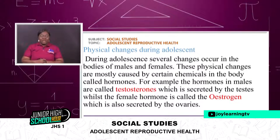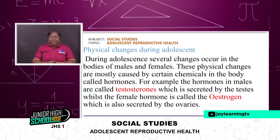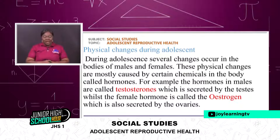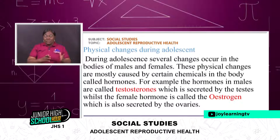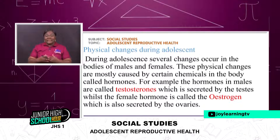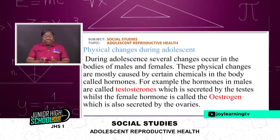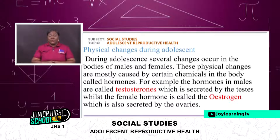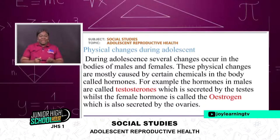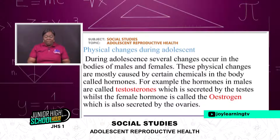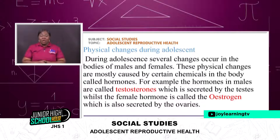During adolescence several changes occur in the body of males and females. These physical changes are mostly caused by certain chemicals in the body called hormones. For example, the hormone in males is called testosterone, which is secreted by the testes, whilst the female hormone is called estrogen, which is also secreted by the ovaries.